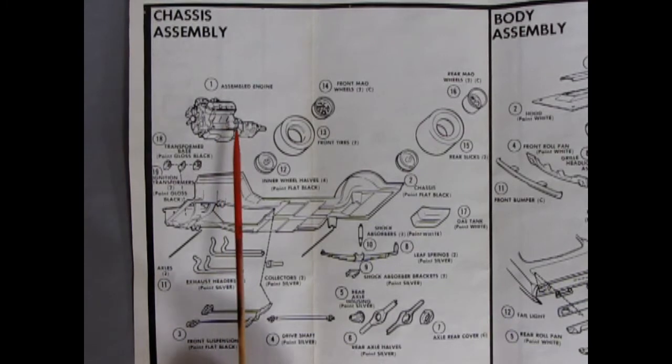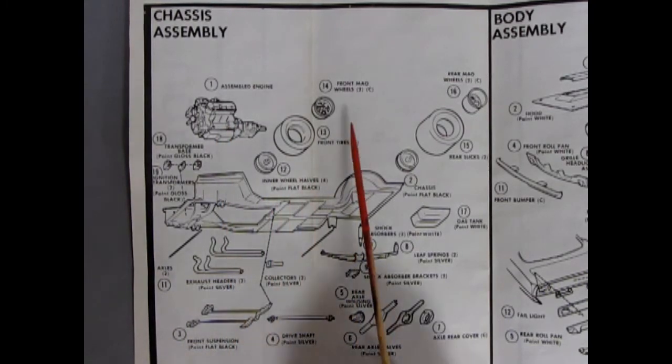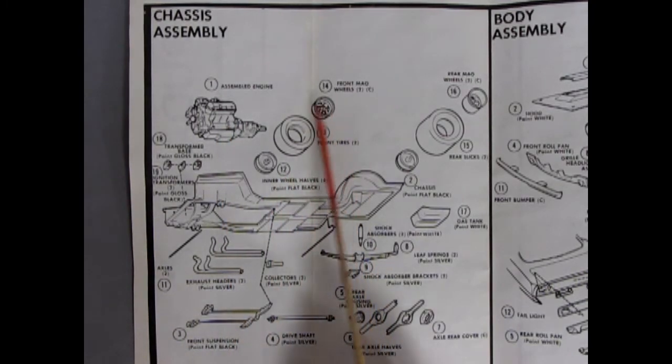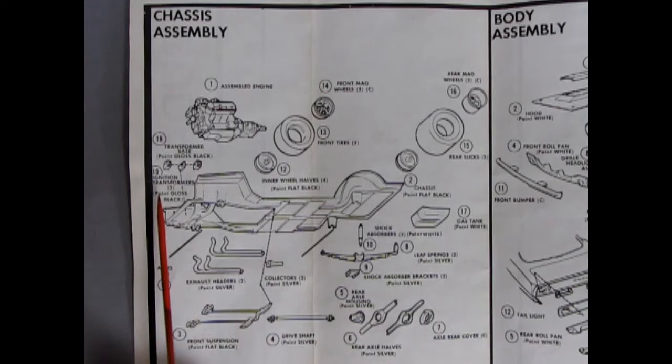Our fourth panel shows our chassis assembly going together. And of course, our assembled engine will drop into place. We've got three-piece wheels with the keystone-type wheels. In the front, the front tires, the wheel back. Now look at this. We've got a transformer. We've got the base, the ignition transformers, three pieces all gluing together into our frame here.